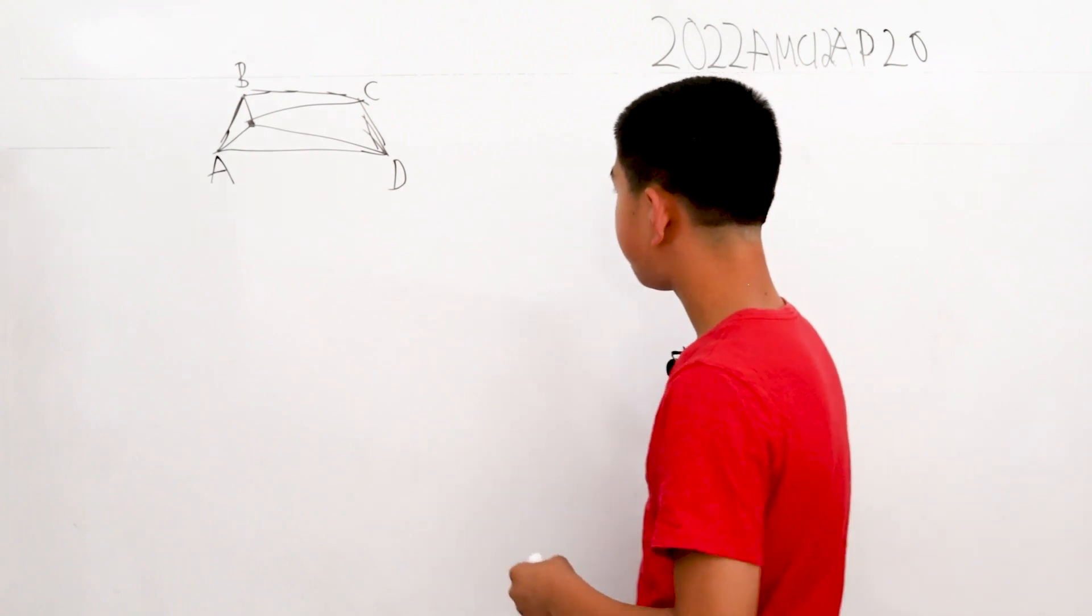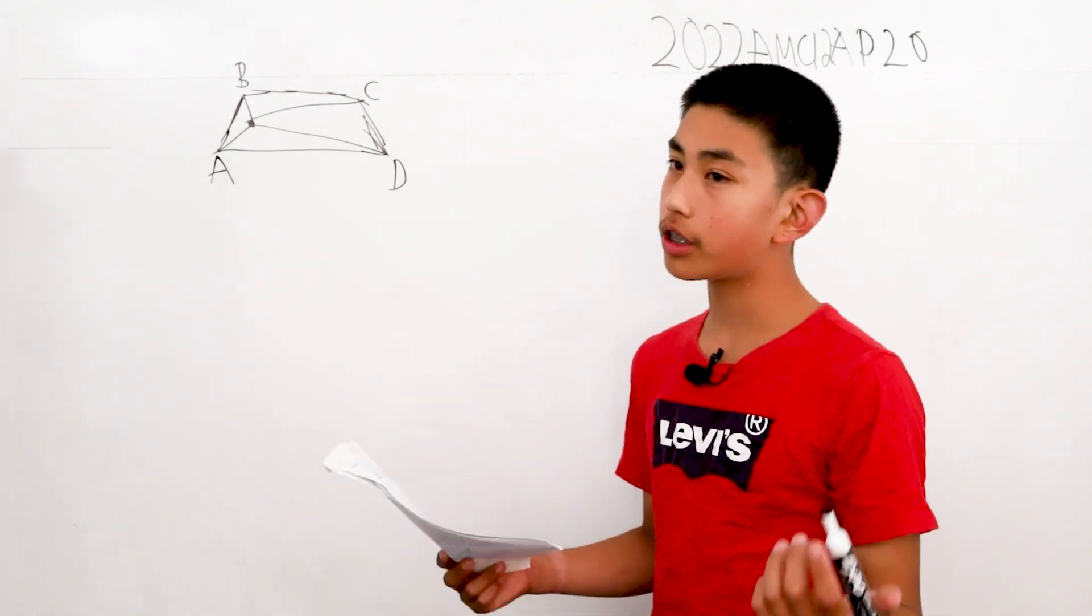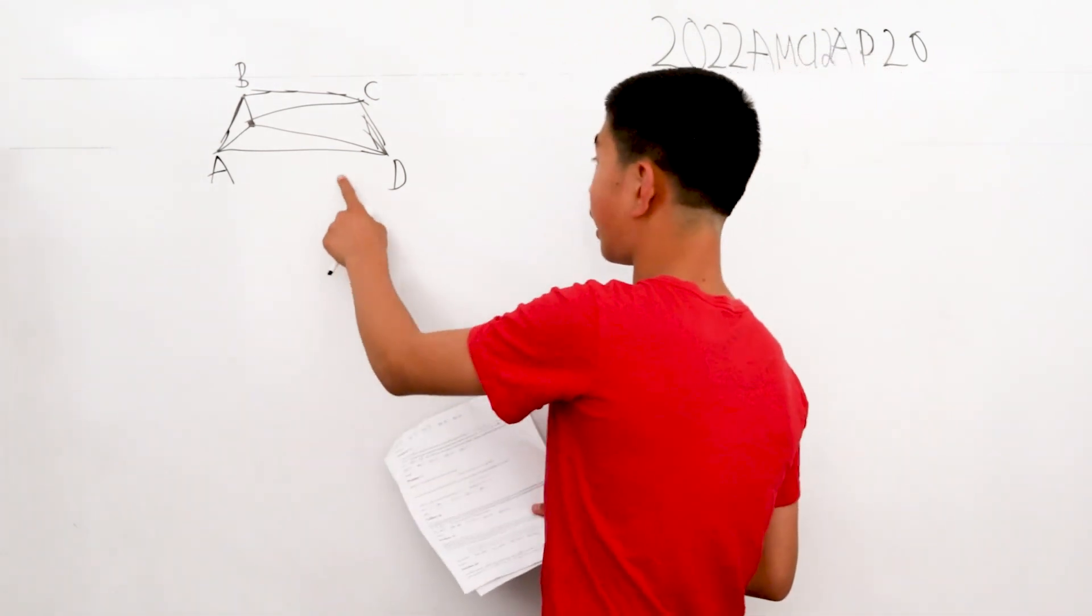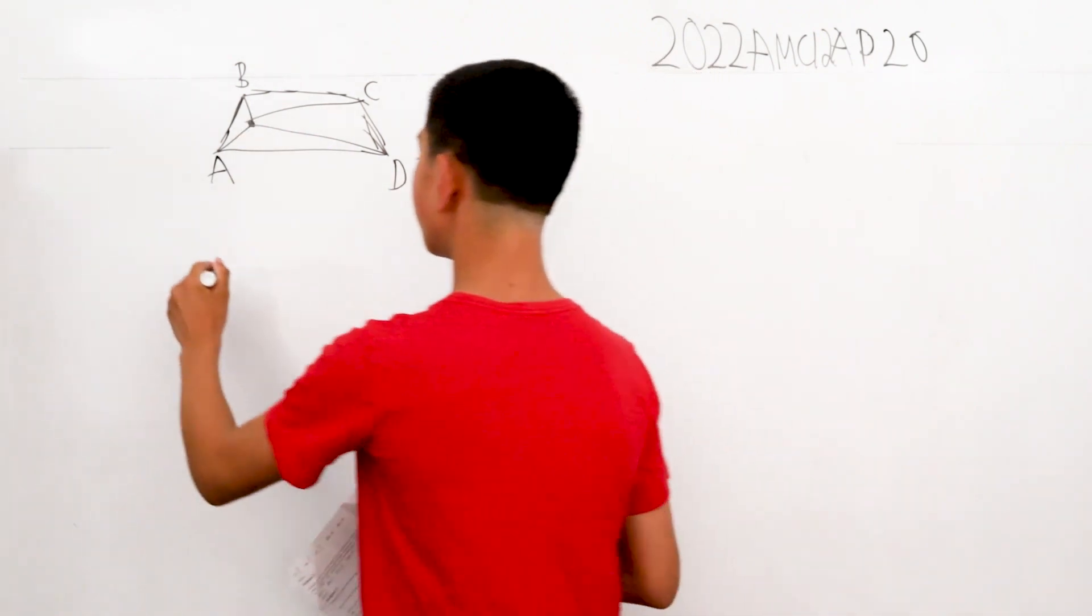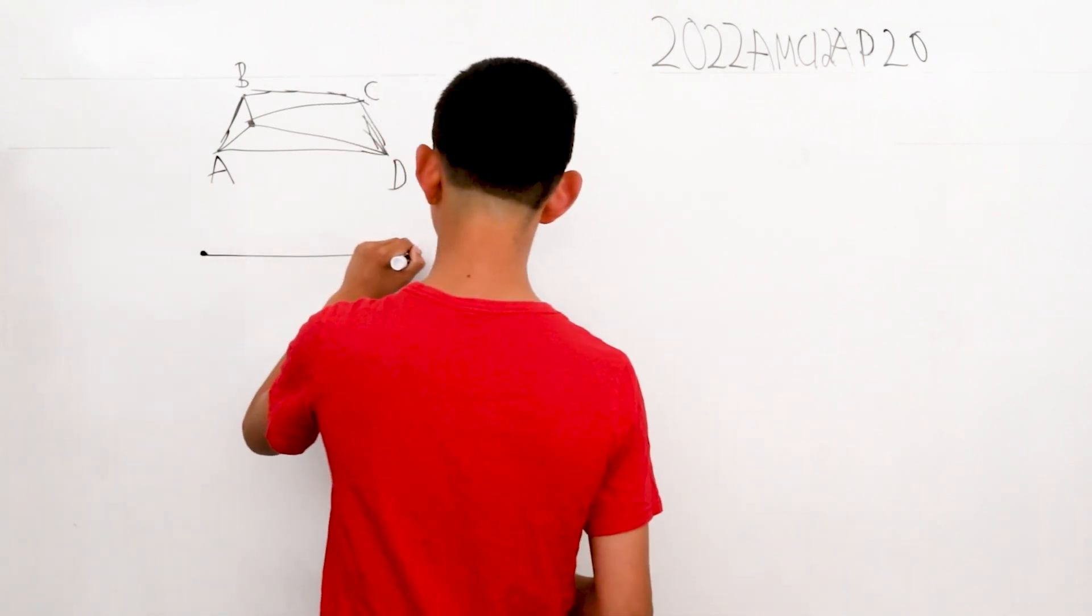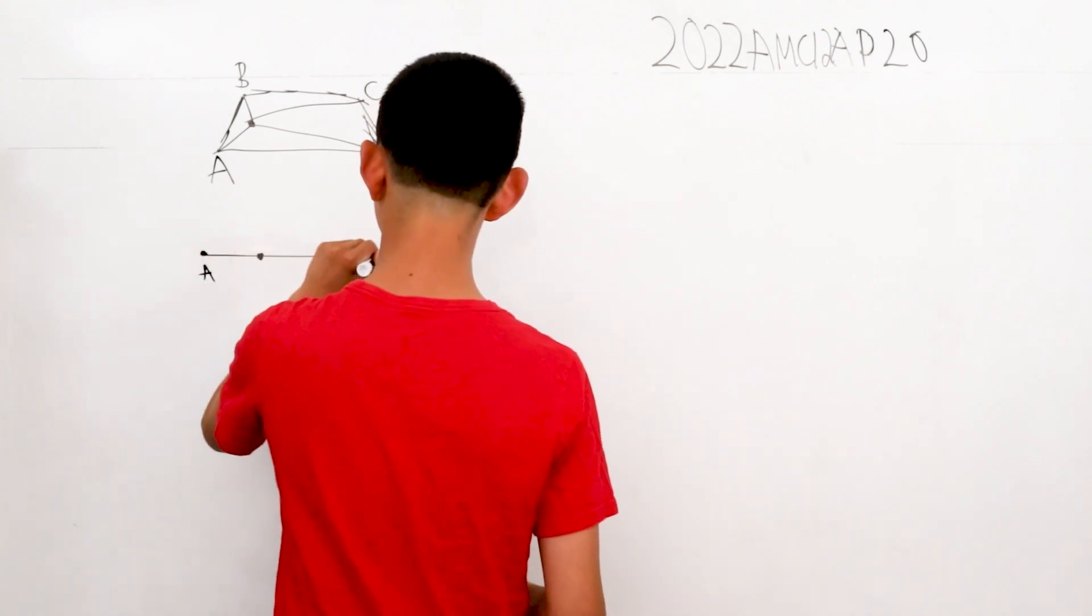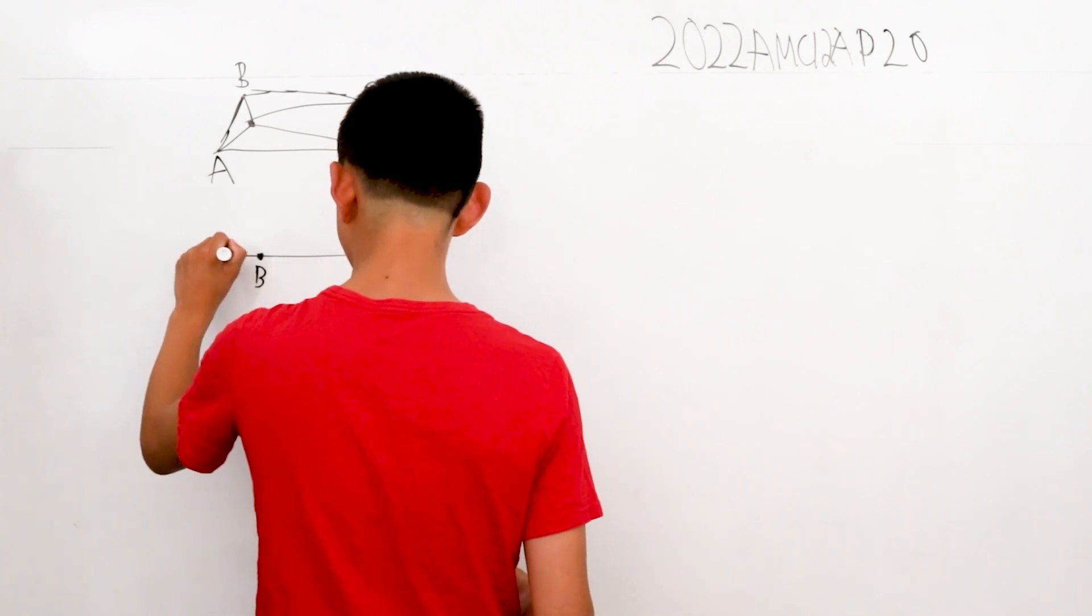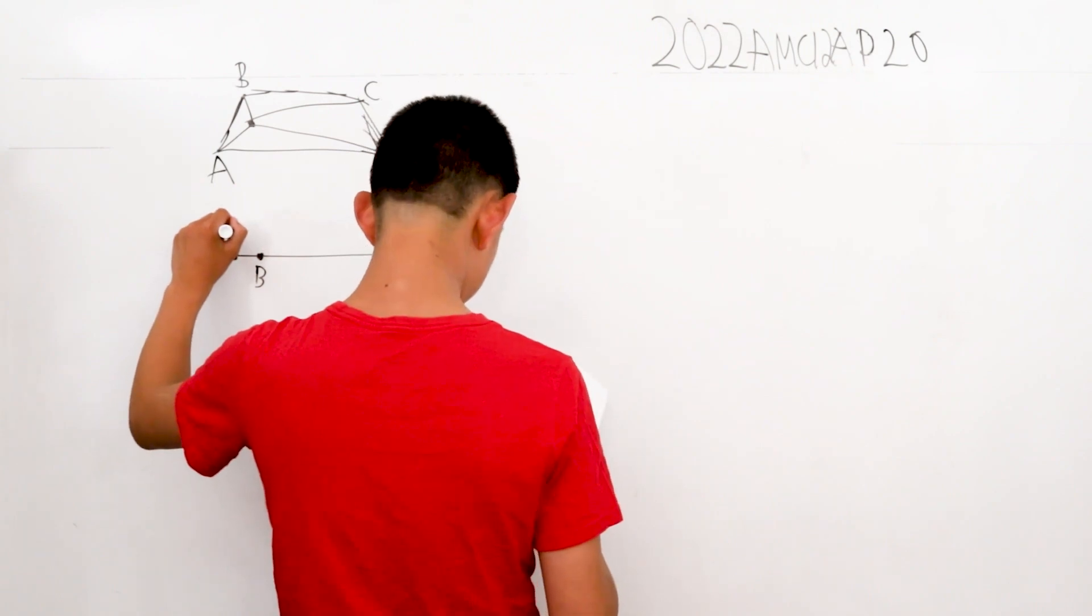But we can simplify things down because the problem doesn't explicitly state that the points aren't all on this line. So what if the points are all on the line? If it's A to D, say BC is somewhere here, B and C. If point P is here right in the middle of A and B.